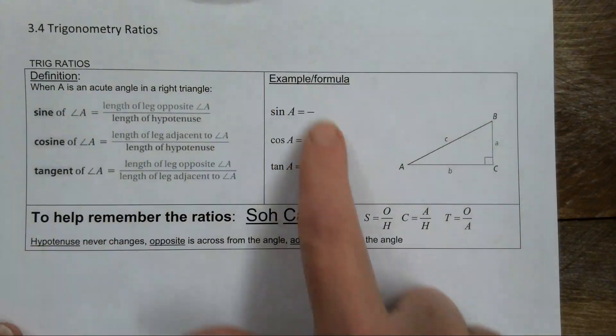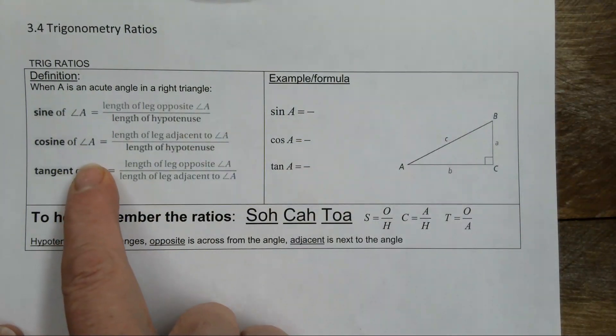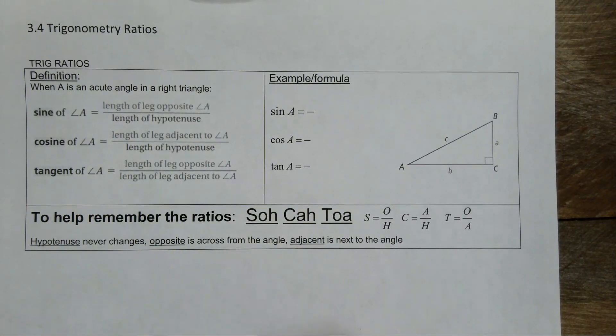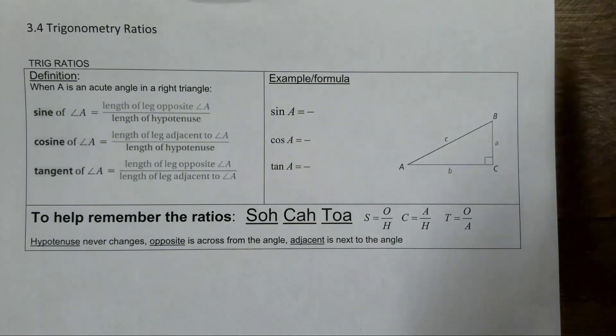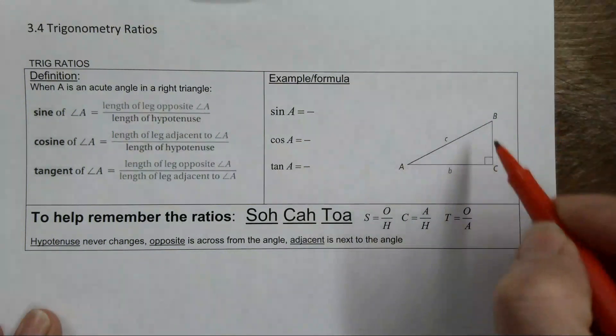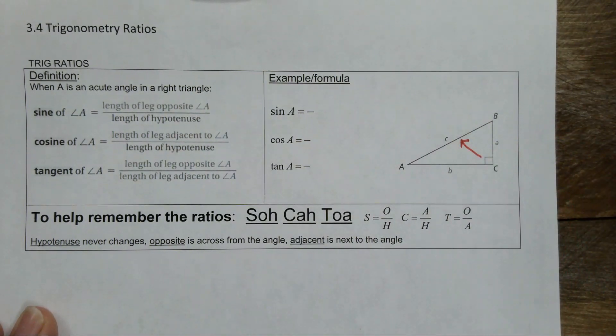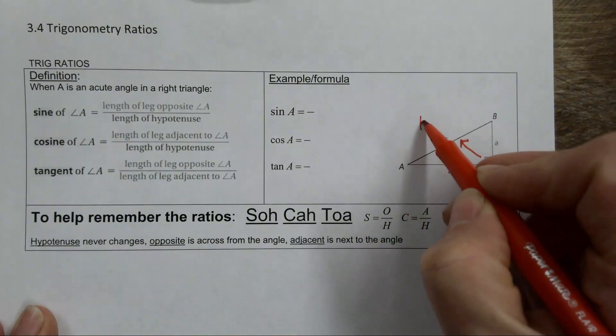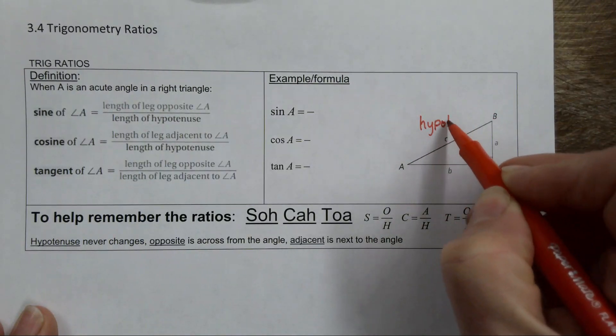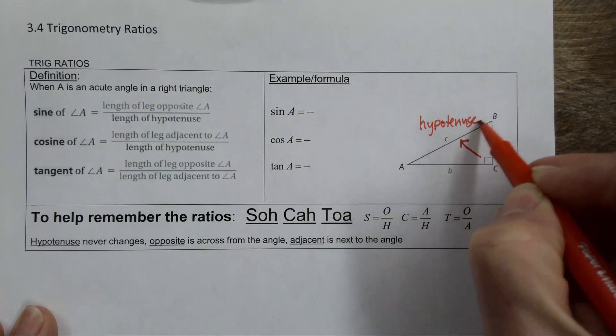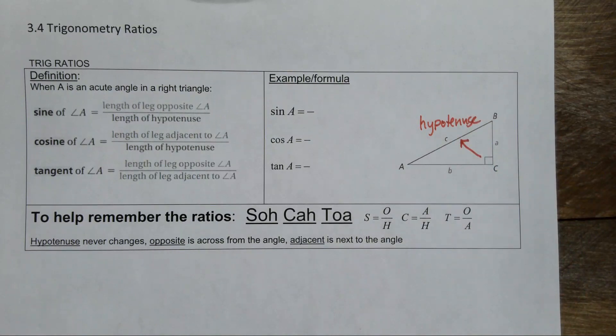When you look at a triangle to use the trig ratios, it's important that you know what the opposite and the adjacent sides are. The hypotenuse is pretty easy to find because the hypotenuse will always be across from the right angle. So in this case, the hypotenuse, and in most cases, it's been standard that we label the hypotenuse with C.